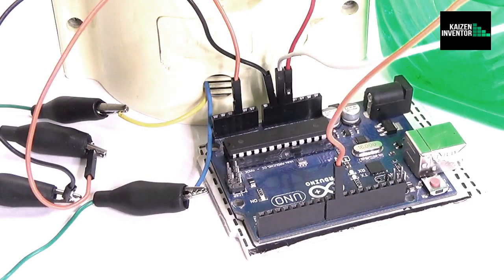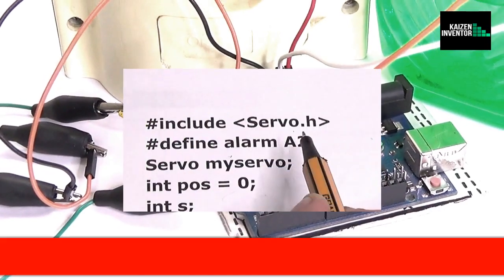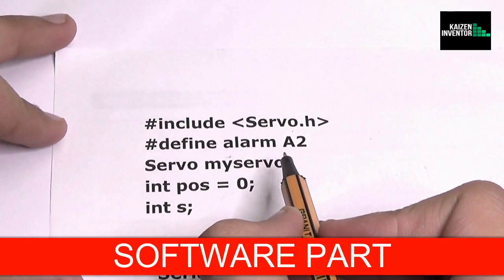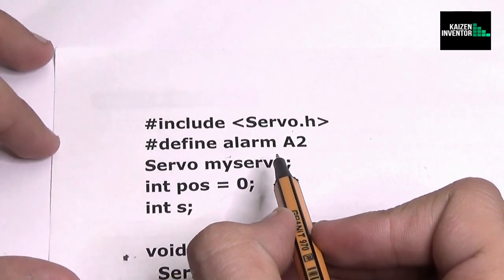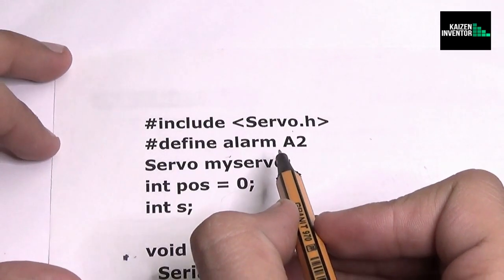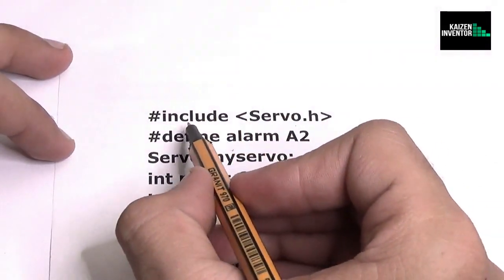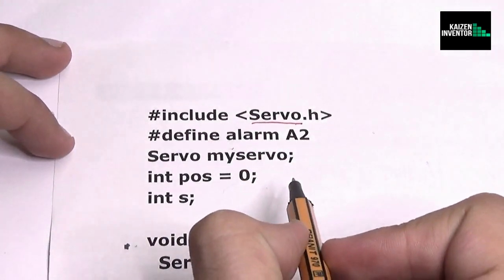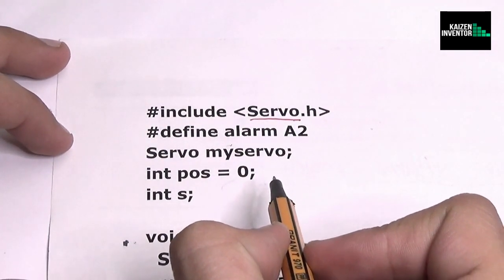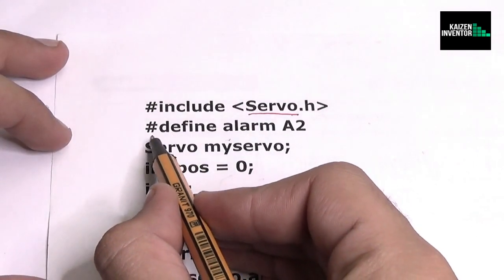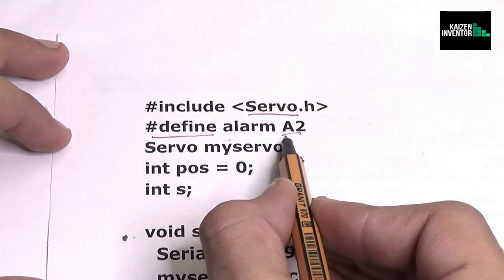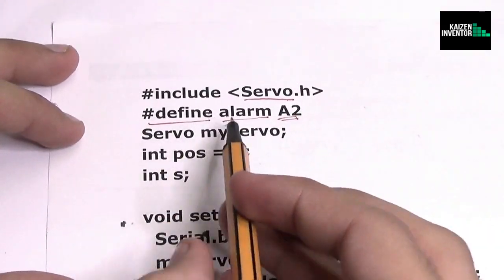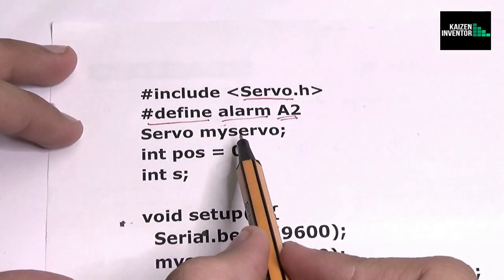Alright, so now let's move to its software side. So now let's jump to the software part and the code part. So let us understand the code. So first of all we include the servo library which is recommended for the usage of the servo. Next step we define the pin A2 as alarm and we define our servo name as myservo.